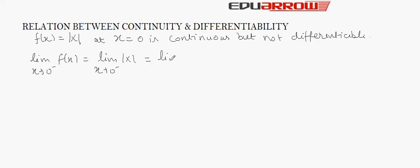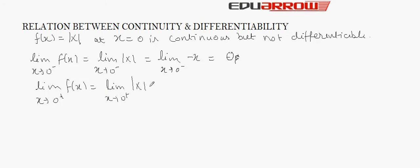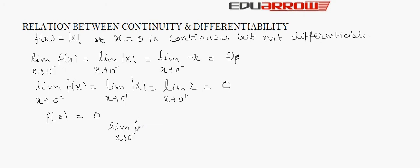Here, we will take modulus of x as minus x because x is less than 0, so it will come out as minus 0, which is 0. Now, we will find out the right-hand limit, that is, limit x tends to 0 positive of f(x), which is equal to limit x tends to 0 positive of modulus of x. Here, modulus of x will be x because x is greater than 0, so it will come out as 0. And f(0) is also 0. So, the left-hand limit of f(x) is equal to the right-hand limit of f(x) is equal to f(0). Hence, the above function is continuous.